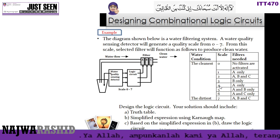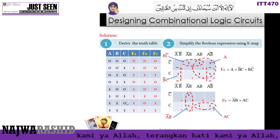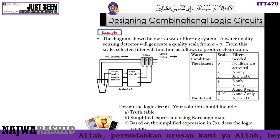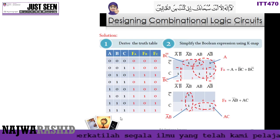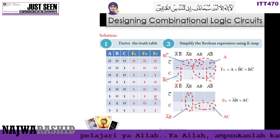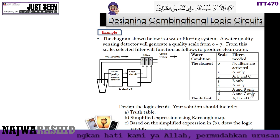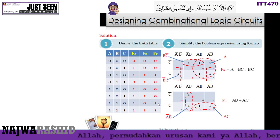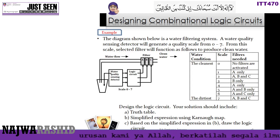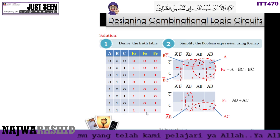At scale 4 (100), only Filter A is activated, so Filter A equals 1 and the rest equal 0. At scale 5 (101), Filter A and Filter B are activated, so Filter A and Filter B equal 1 and Filter C equals 0. At scale 6 (110), Filter A and Filter C are activated. At scale 7 (111), all filters are activated.